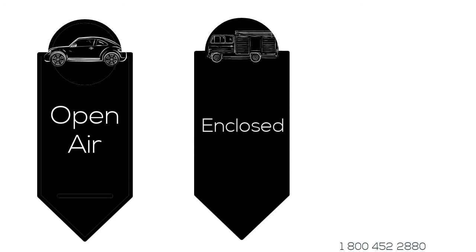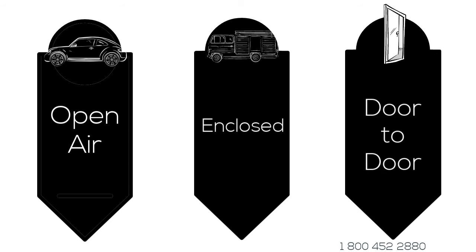Open air - the fastest and cheapest way to transport your vehicle. Enclosed - a little more time to deliver but protection from all the elements. Door-to-door - a way to deliver your vehicle right to your doorstep.